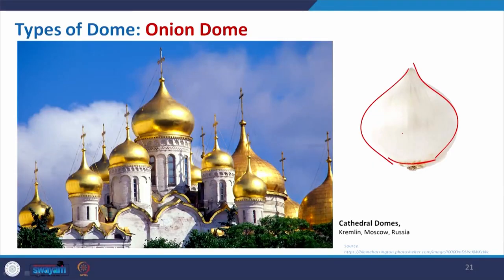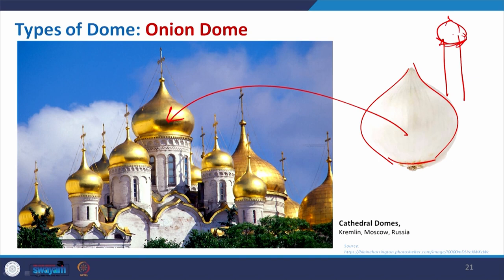The onion dome is the easiest to remember — we all know the shape of an onion. Earlier I gave the example of Taj Mahal; even the towers of Disneyland have this form. We have seen it in documentaries and Disney movies like Aladdin. This is basically the cathedral drums from Russia, where the onion form is easily visible — it looks like a golden onion.